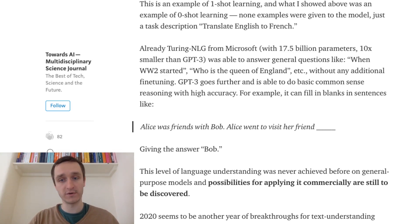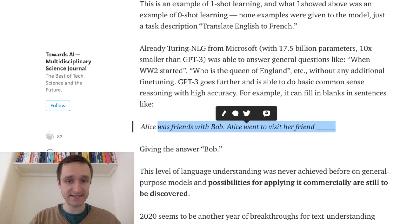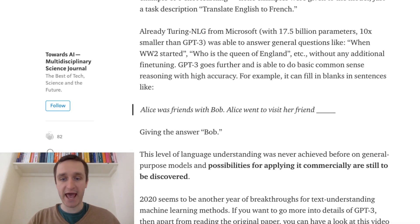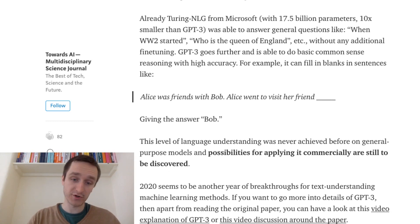Another example for this common sense task is filling in blanks in sentences. So for example, if you have a sentence like 'Alice was friends with Bob, Alice went to visit her friend' and you have this blank space to fill in, then the correct answer is Bob. So this is something that GPT-3 is able to do, again, to some extent.